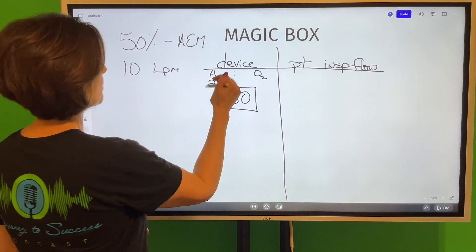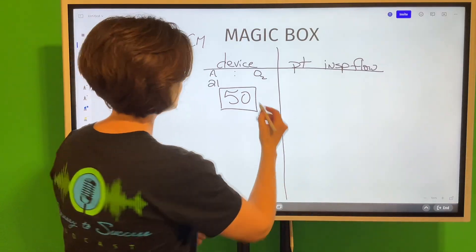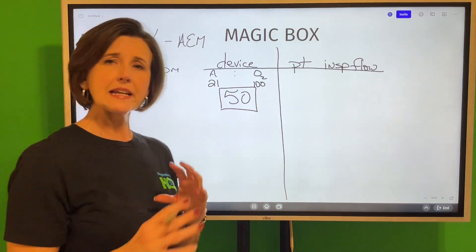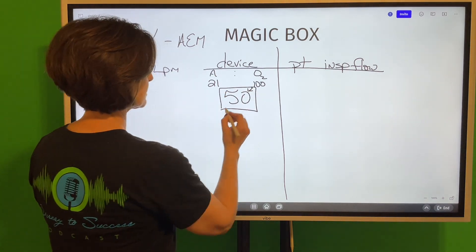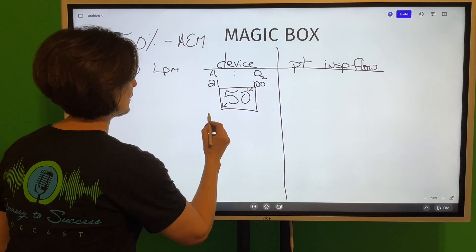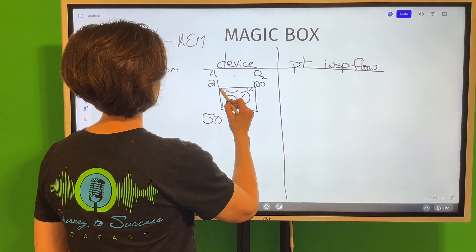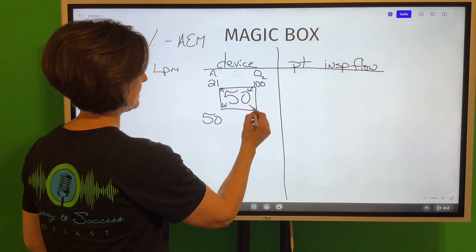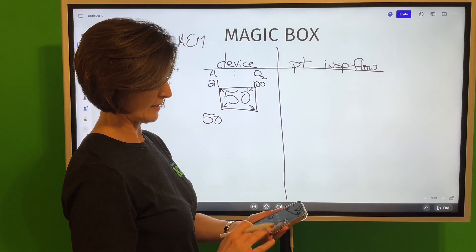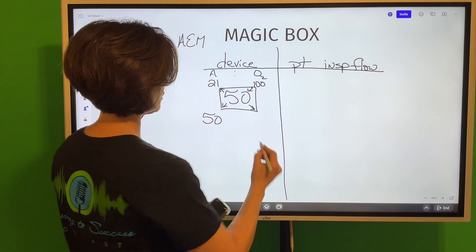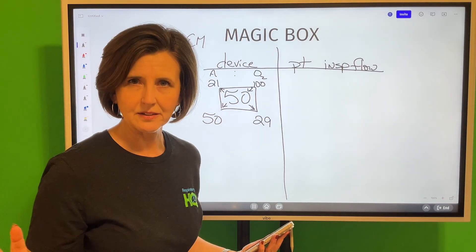Okay, so the air part of this is 21. The O2 part, what is the FiO2 of pure oxygen? 100%. Okay, now we do some kind of funky math. We go 100, we're going to subtract this way. 100 minus 50 is 50. This is where the math gets weird. Then we go 50 minus 21 and that goes right here. This is where I'm going to use my calculator. So if I say 50 minus 21, that is 29.